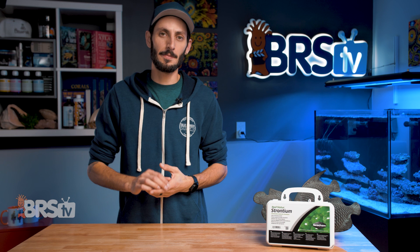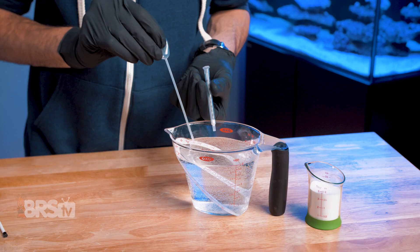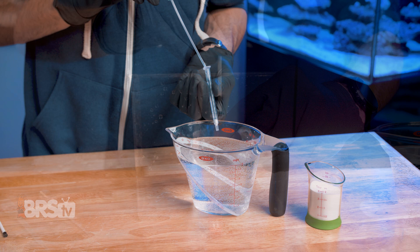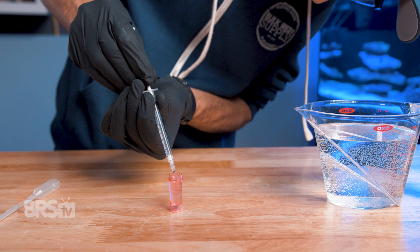First, rinse both vials and the non-graduated pipette thoroughly with RODI water, then hold the separation column over top of the sample vial, and using the graduated pipette, add RODI water to the separation column and push it through with the plunger. Repeat the process, adding more RODI water until the sample vial is filled right to the top. Once it is full, dump the sample vial into the collection vial.